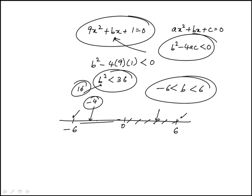it would equal 0 and there would be a real solution. So the answer is -6 < B < 6, which is answer choice D.